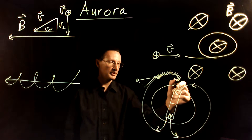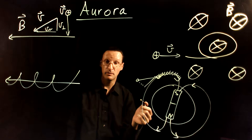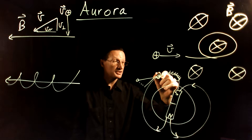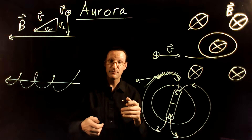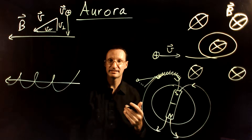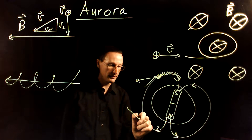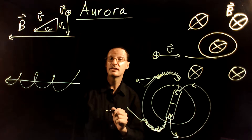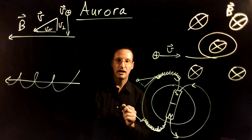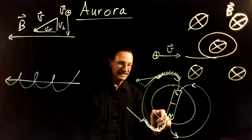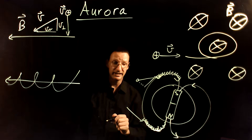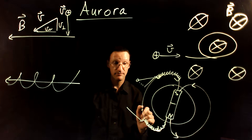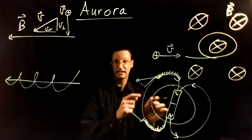These spiraling particles hit the atmosphere just above the geographic North Pole, causing what we call the aurora borealis or the northern lights — a cascade effect that creates visible lights in the sky. If a particle follows a field line into the South Pole instead, there is an aurora australis, or the southern lights, in the southern hemisphere. You don't get auroras at the equator because the field lines there don't intersect Earth's atmosphere.